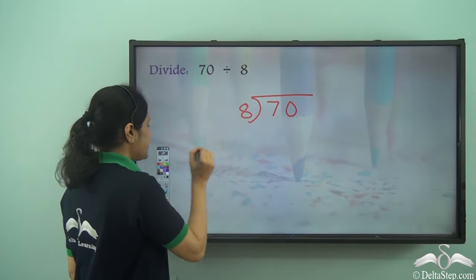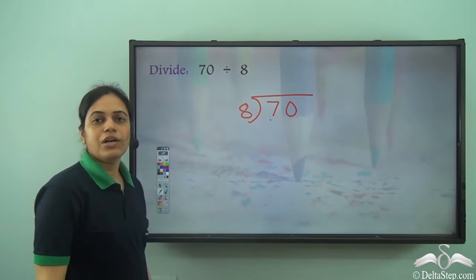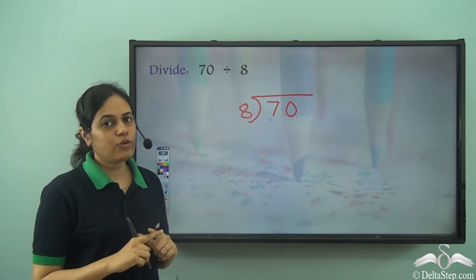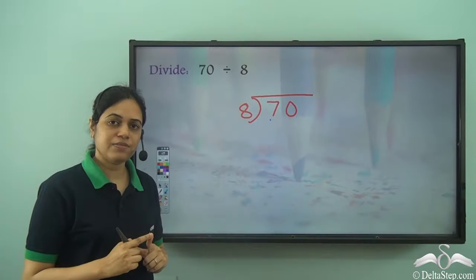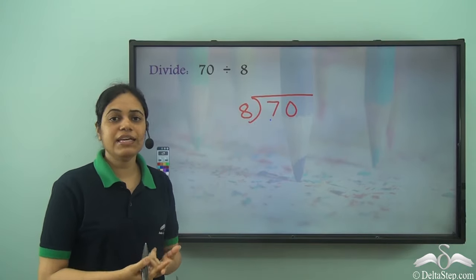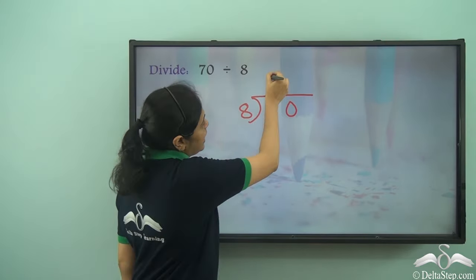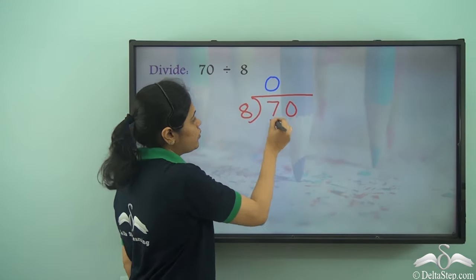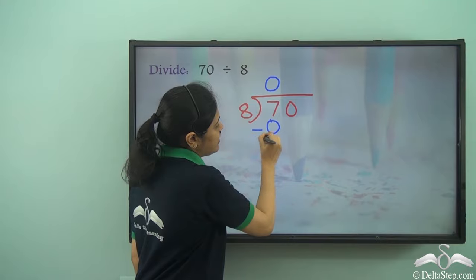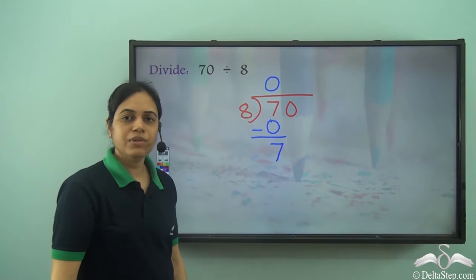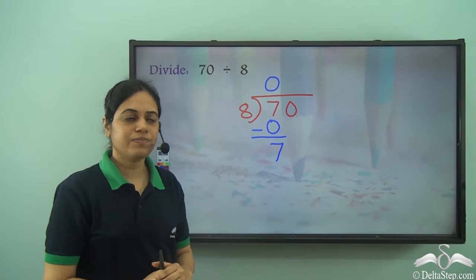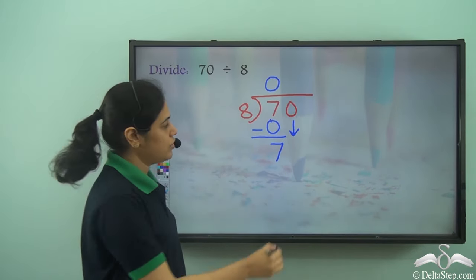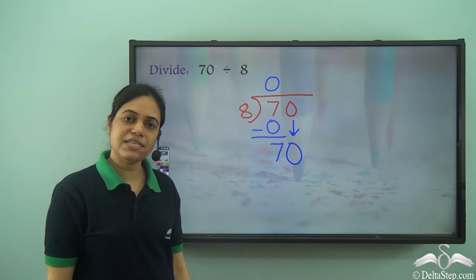First I consider 7. How many times does 8 go into 7? I know 8 into 1 is 8, so 8 does not go into 7 even once — 8 goes into 7 zero times. 0 into 8 is 0. I subtract it to get 7. 7 is less than 8. I need to bring this 0 down. When I bring this 0 down, I get 70.